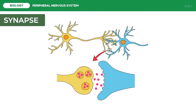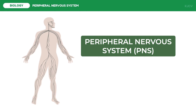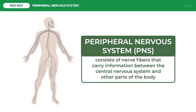Now that we have the overview of neuron anatomy and the relay of information between neurons, we can discuss how information is processed from the internal and external environment to relay a response. This is managed by the peripheral nervous system. The peripheral nervous system, or PNS, consists of nerve fibers that carry information between the CNS and other parts of the body. Since there are two passageways of information in the PNS, there are two primary divisions of the PNS.